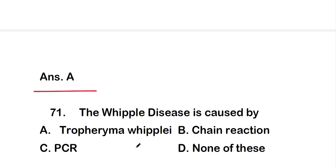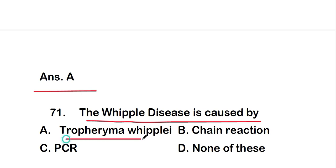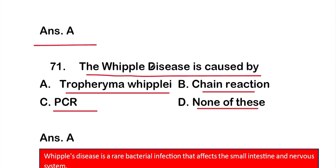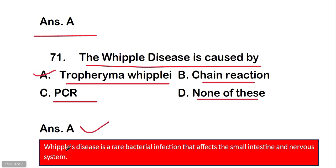Question 71: Whipple's disease is caused by — option A: Tropheryma whipplei, option B: chain reaction, option C: PCR, option D: none of the above. The right answer is option A, Tropheryma whipplei. Whipple's disease is a rare bacterial infection that affects the small intestine and nervous system.